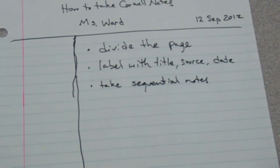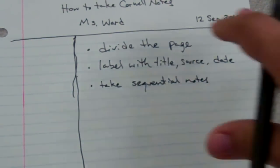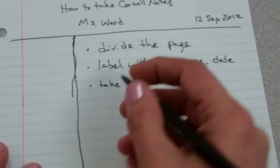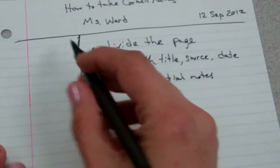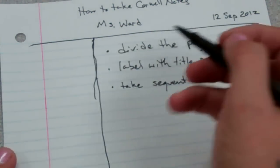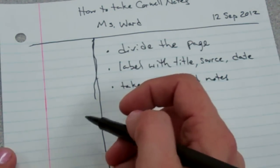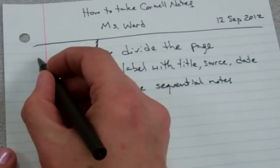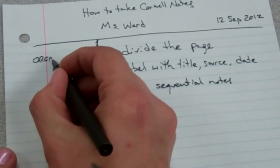After you have made your page look like mine, you're taking the notes about note-taking right now, so it's sort of meta. You want to add in the left margin any keywords that describe what it is that you've just learned. So, maybe for here, dividing the page, maybe a keyword for me here would be organize.